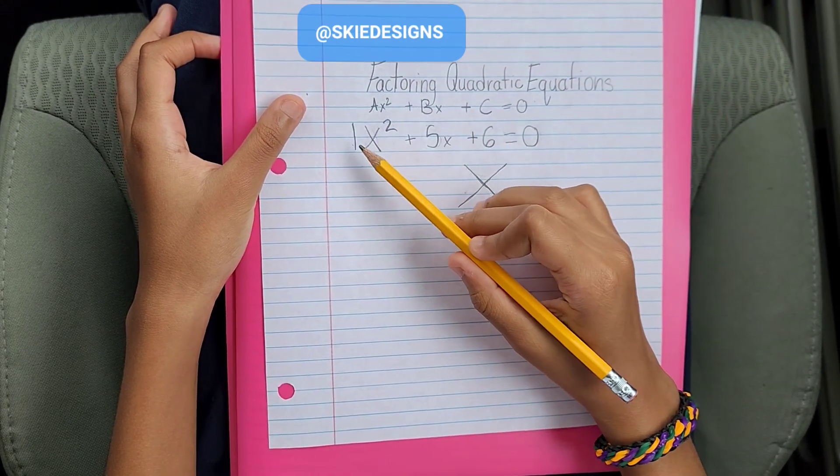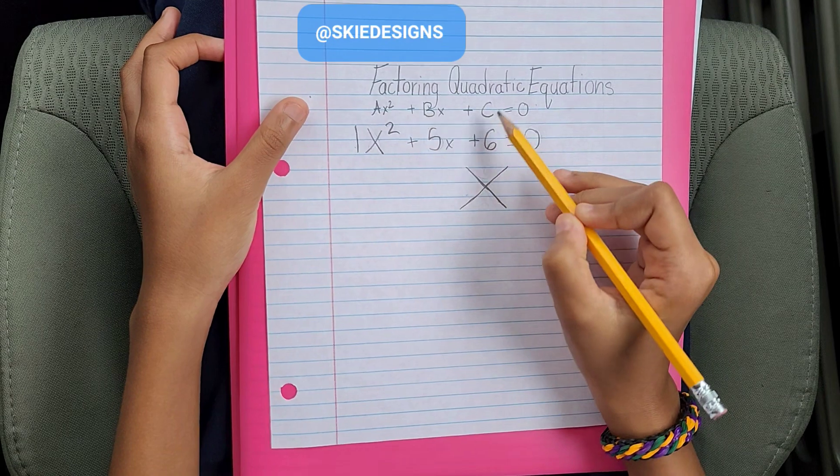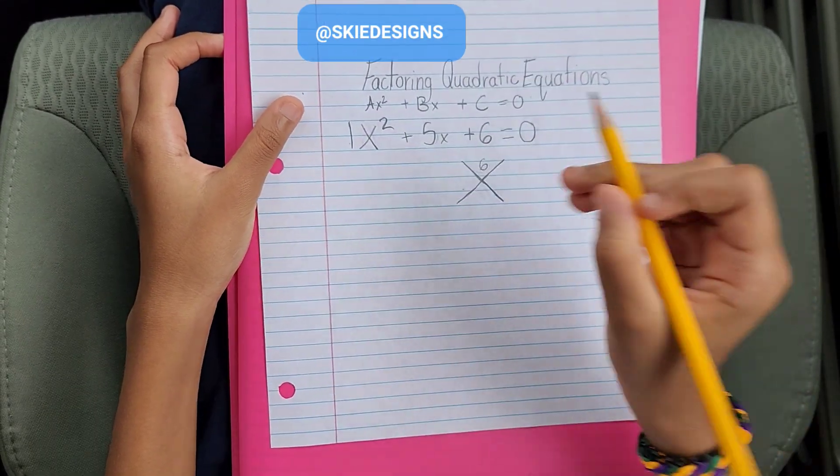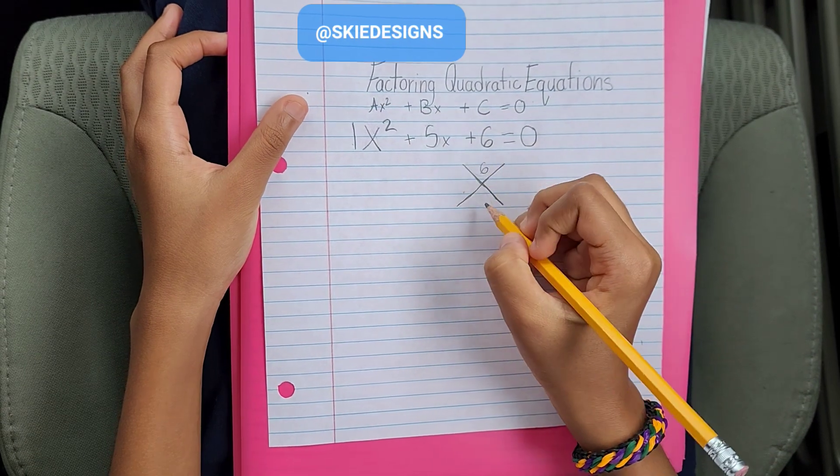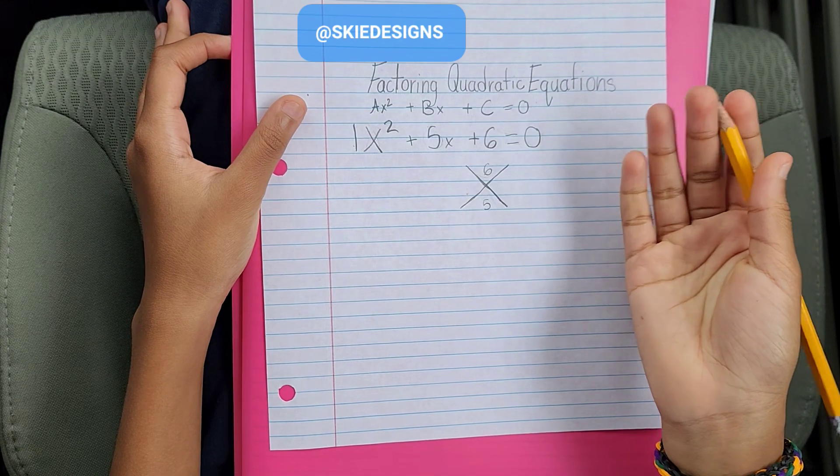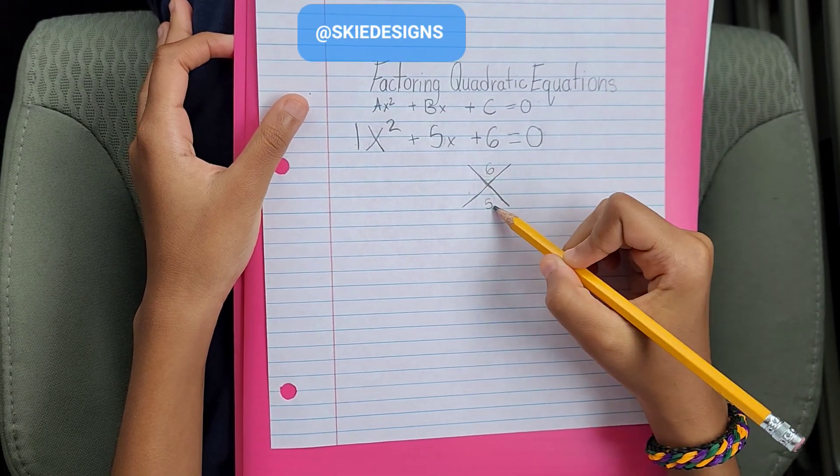So now let's follow the formula. 1 times 6, or a times c, is equal to 6. So we'll put that on the top. Then b is 5, so we're going to put that on the bottom. Now we need two numbers where when we multiply it, it will give us 6, but when we add it, it gives us 5.